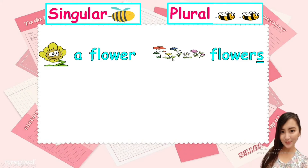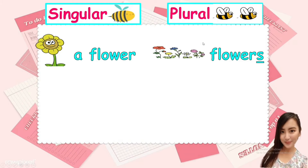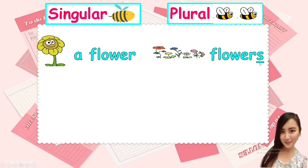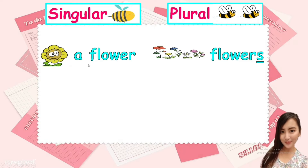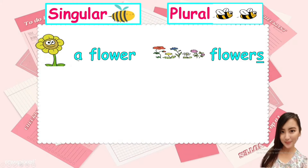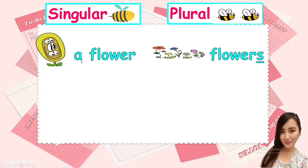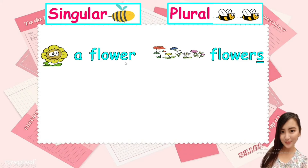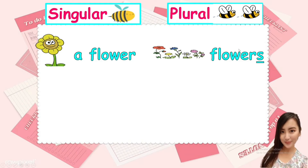More than one. For plural, we remove the article and we put S. For singular, we put an article and no S. Again: a flower. Flowers.